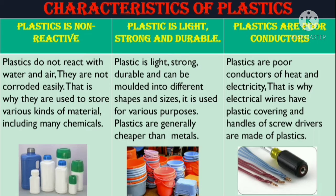Plastic is light, strong, and durable, and can be easily molded into different shapes and sizes, making it useful for various purposes. Plastics are generally cheaper than metals. Plastics are also poor conductors of heat and electricity, which is why electric wires have plastic covering and handles of screwdrivers are made of plastic.